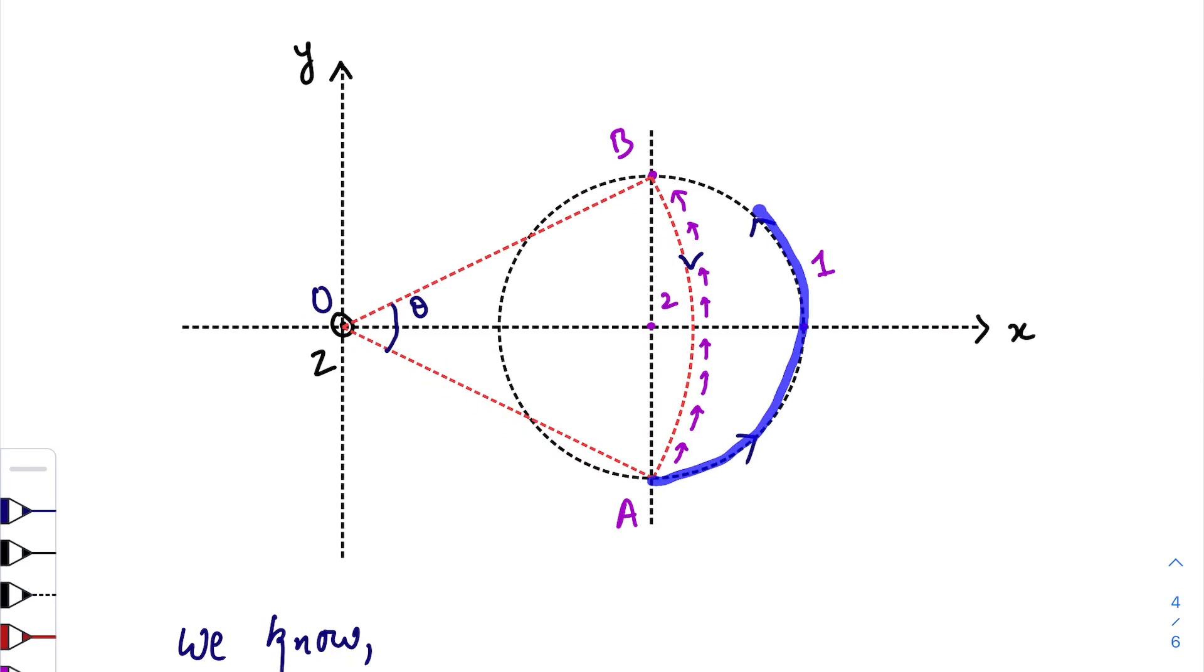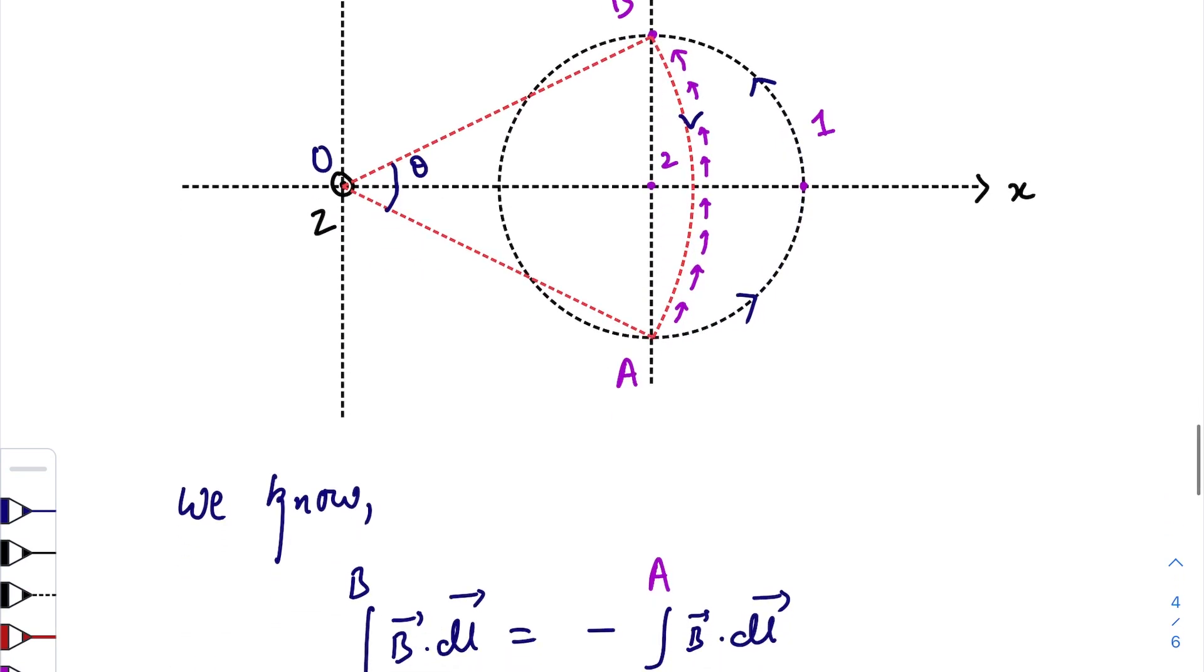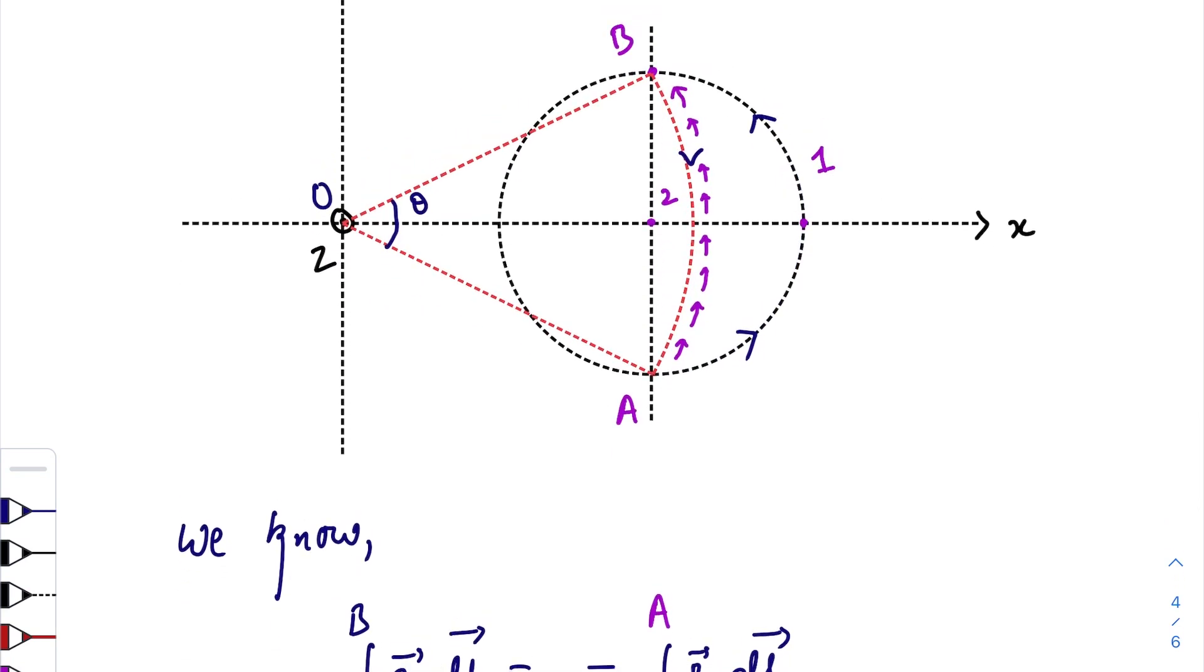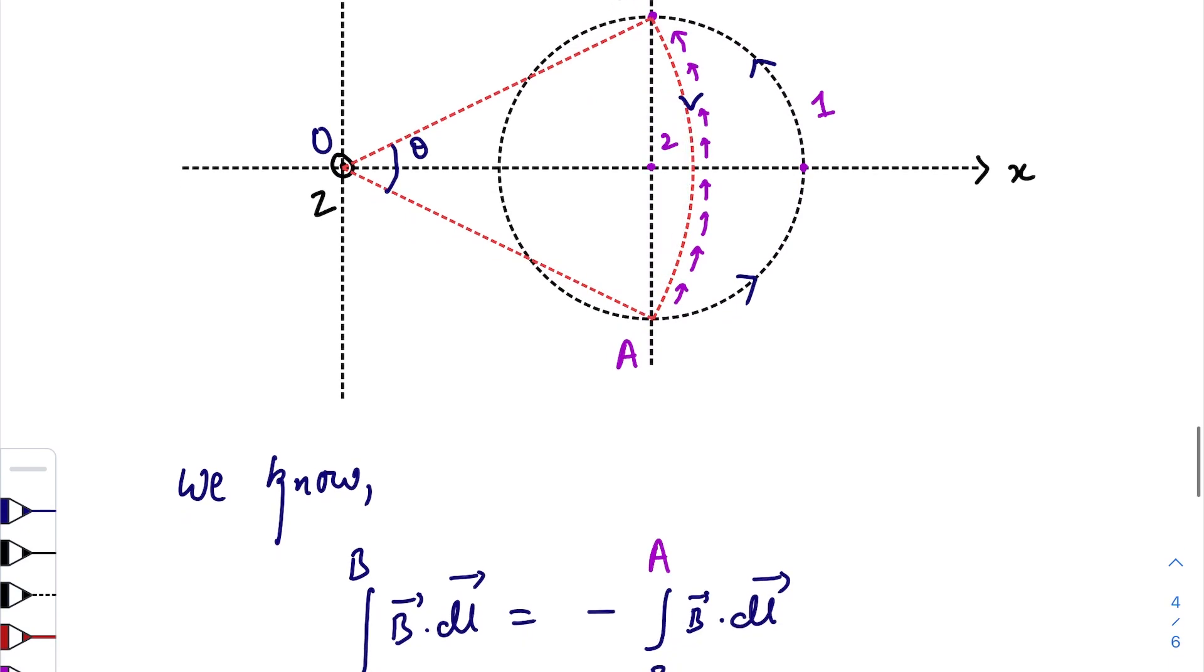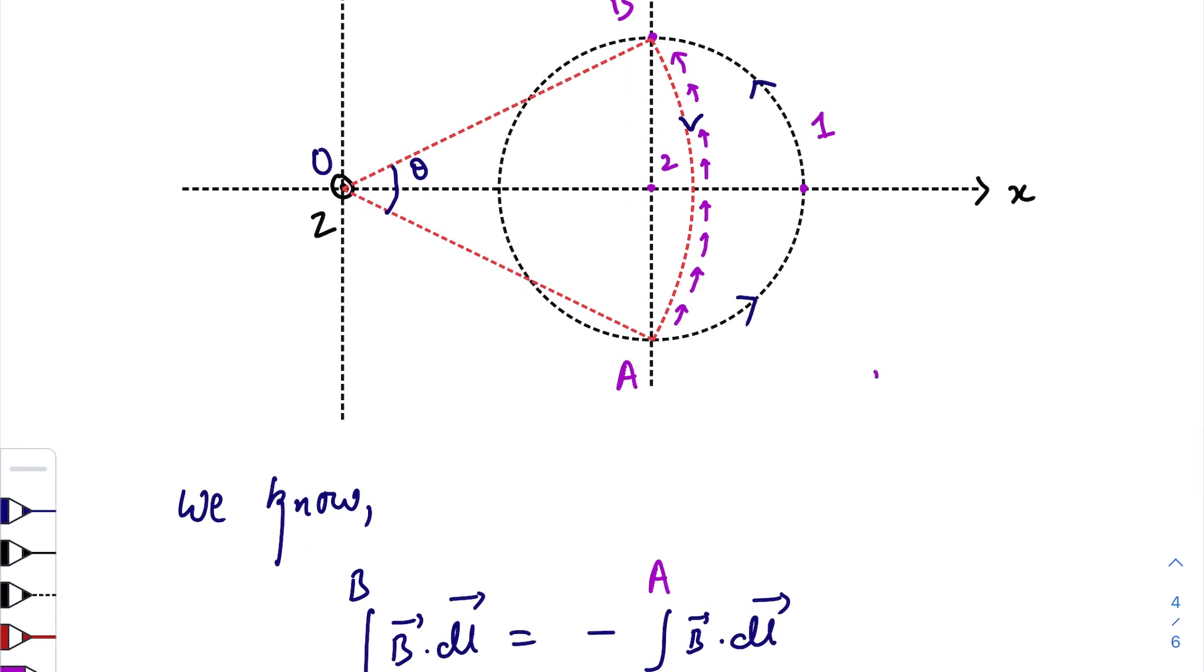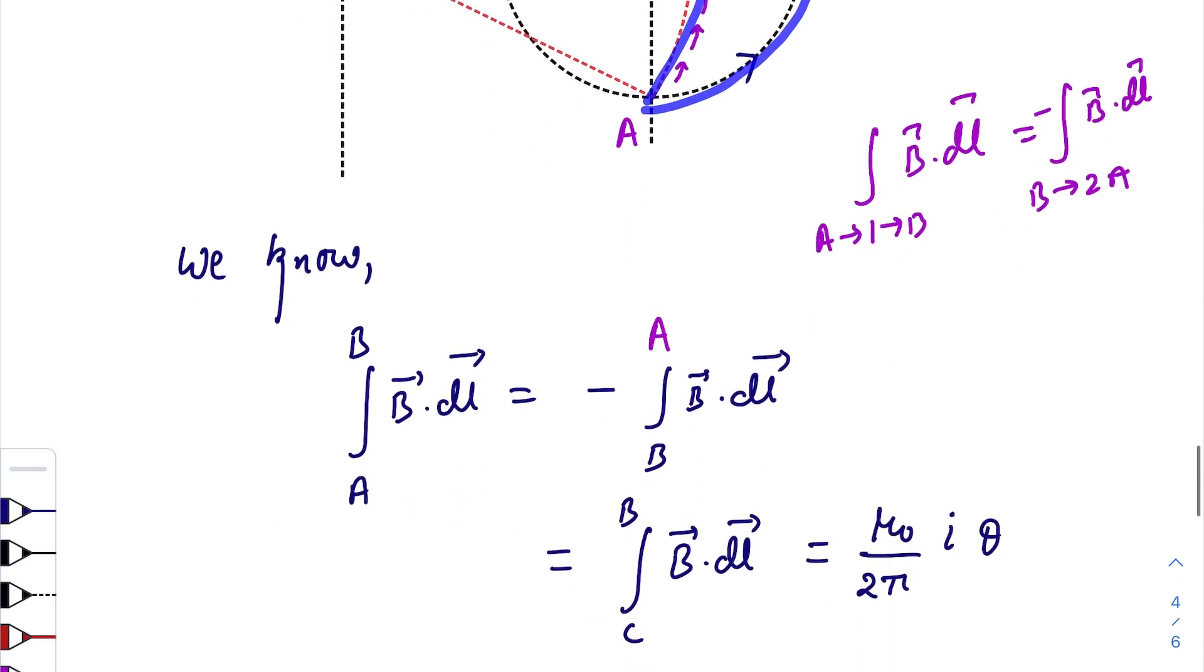I've taken a random situation here. Integration A to B of B dot dl will be equal to negative integration of A to B via this path. We can write A₁B of B dot dl equals integration from B to A with a negative sign of B dot dl.